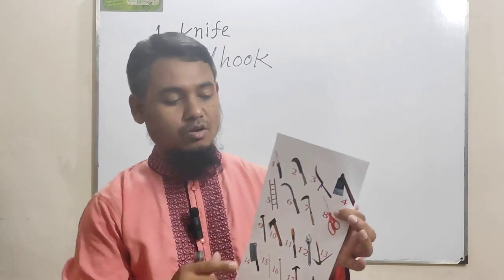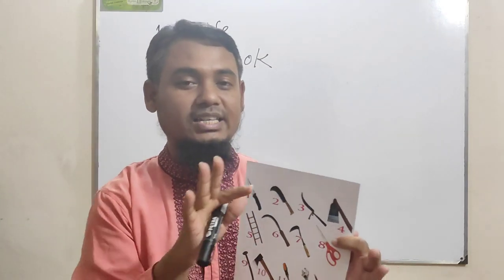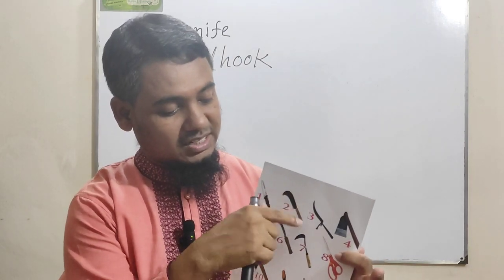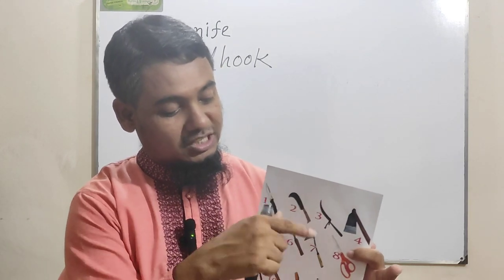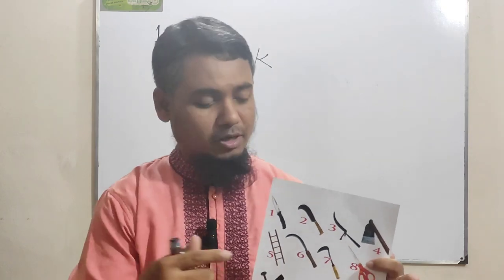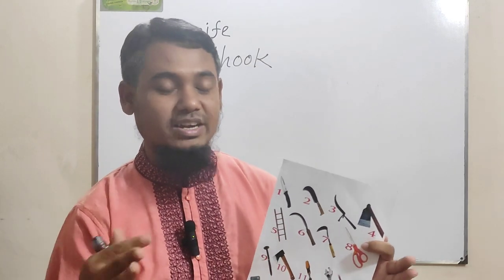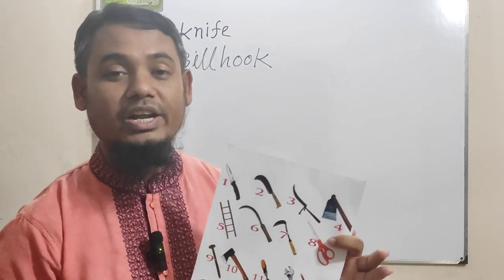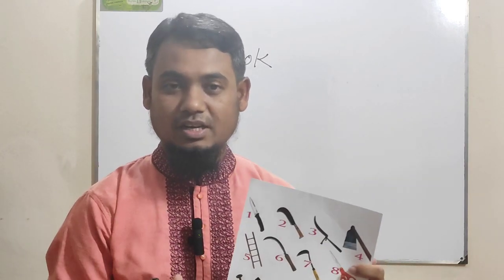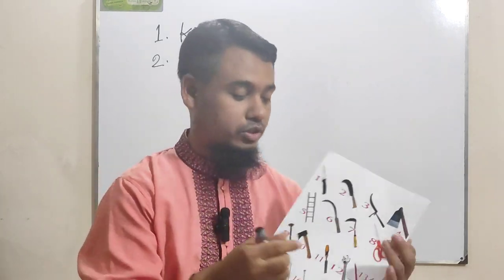Picture number three — it is very common in different houses because it is used to cut vegetables and meat. This tool name is booty. It is very common in city and village areas and is needed for every family. You may call it a vegetable cutter, fish cutter, or meat cutter, but this tool name is booty. Picture number three is booty.